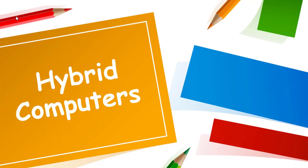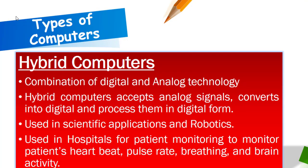The third main type is hybrid computers. Hybrid computers are a combination of analog and digital technology. They accept analog signals, convert them into digital, and process them in digital form. They are used in scientific applications and robotics. A common example is patient monitoring machines found in hospital ICUs, which monitor heartbeat, pulse rate, breathing, and brain activity — these are all hybrid computers.